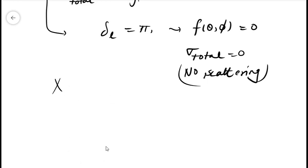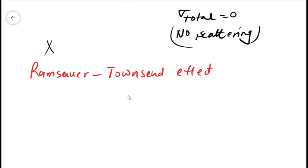And this effect is known as the Ramsauer-Townsend effect. I am not sure whether the spelling or the pronunciation is correct. And this effect can be understood easily as follows.